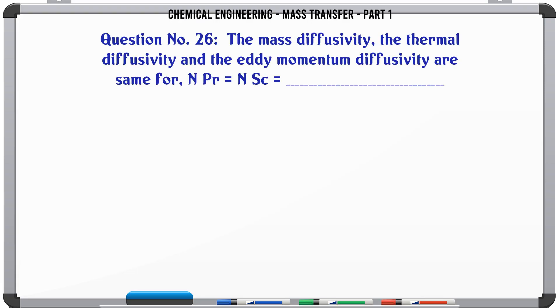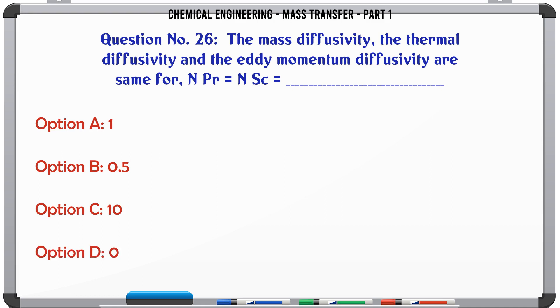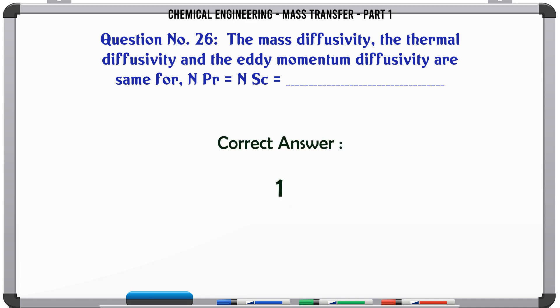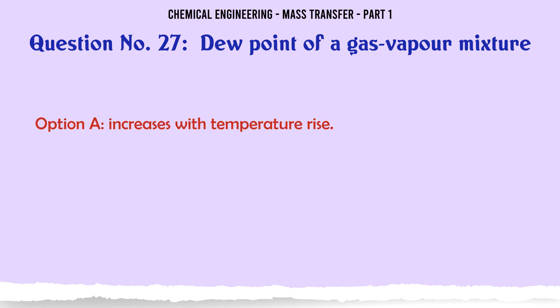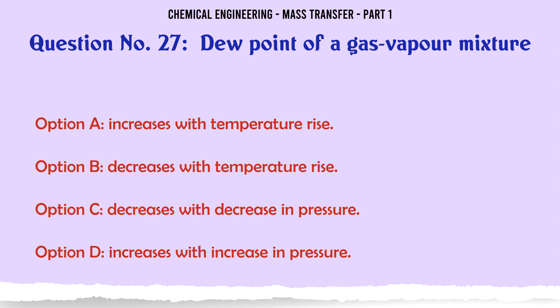The mass diffusivity, the thermal diffusivity and the eddy momentum diffusivity are same for [a gas]. [The mass diffusivity] decreases with temperature rise. C. Decreases with decrease in pressure. D. Increases with increase in pressure. The correct answer is decreases with decrease in pressure.